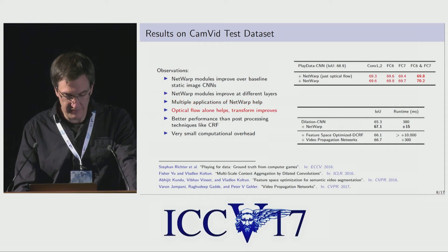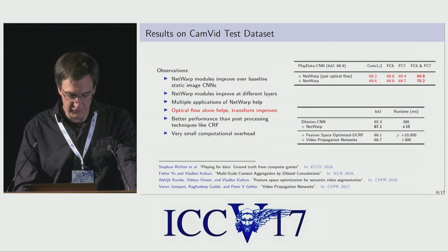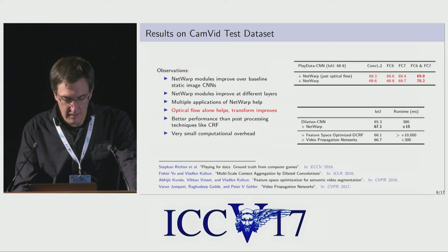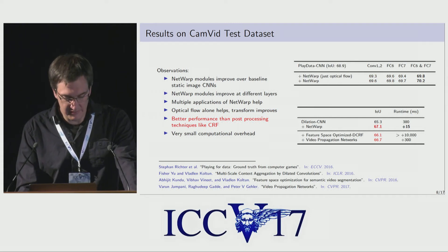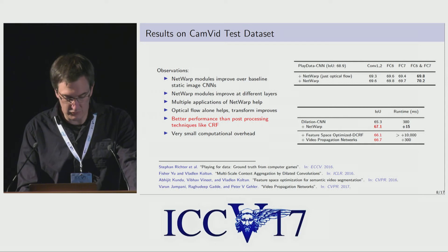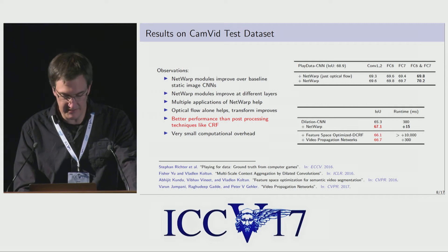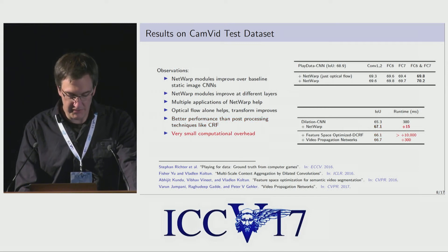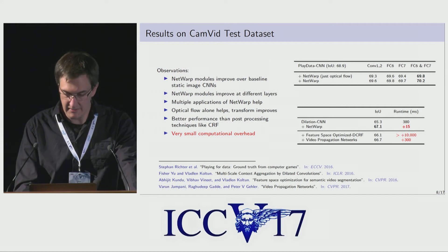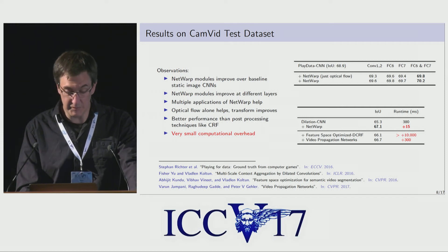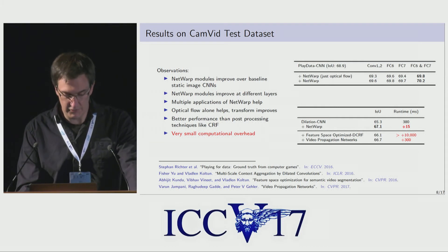Having multiple NetWarp modules at different depths shows even better performance. We also observe that using optical flow alone — without learning a transformation — already improves performance, but learning the transformation helps a little bit more. For direct comparison with other video segmentation techniques using the dilation CNN model, we observe better performance than post-processing techniques like feature space optimization with dense CRF and our previous video propagation networks work. The additional computational overhead per frame is tiny: all improvements from NetWarp come at a cost of only 15 milliseconds, which already includes the time for computing optical flow using dense inverse search flow.